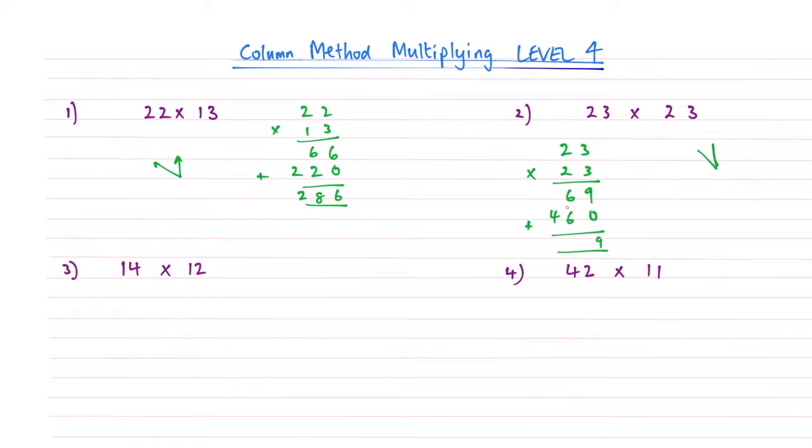And this is where we have a carry. 6 add 6 becomes 12, carry the 1, like from column method addition. And if that's just a bit rusty, you can go ahead and watch that playlist. And the last one becomes 4 add 1, which is 5. So that's where we get the answer for number 2 from, 529.